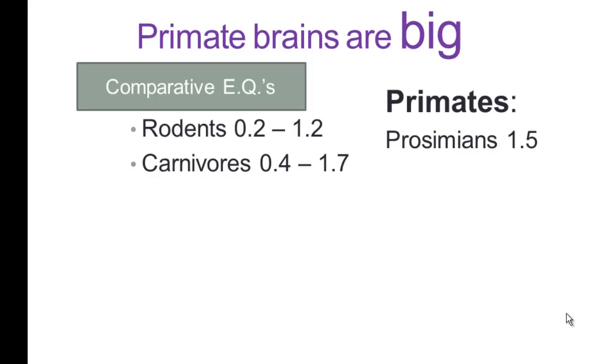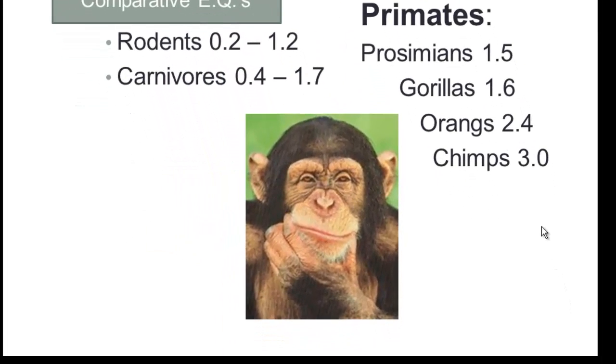Primates, we start out with prosimians. And here we find the EQ is 1.5, one and a half times larger than expected for a mammal their size. And chimpanzees are the champions of the primates, other than humans, with an EQ of 3.0. And this is a very popular image on the internet of the chimpanzee thinker. And there's probably good grounds for that.